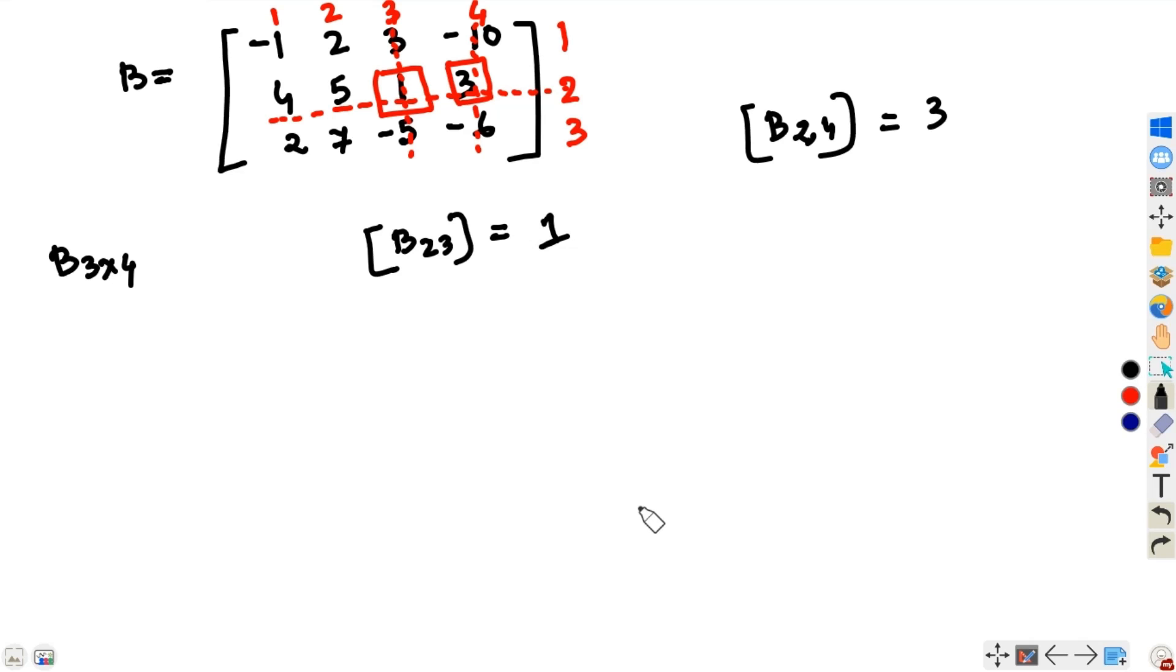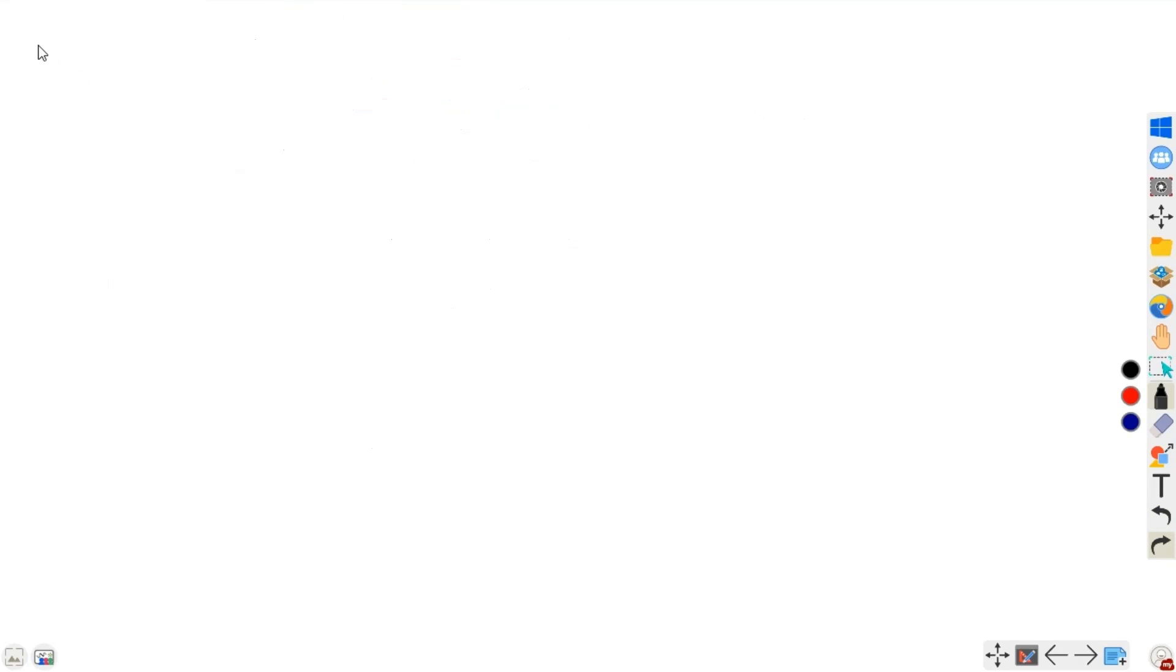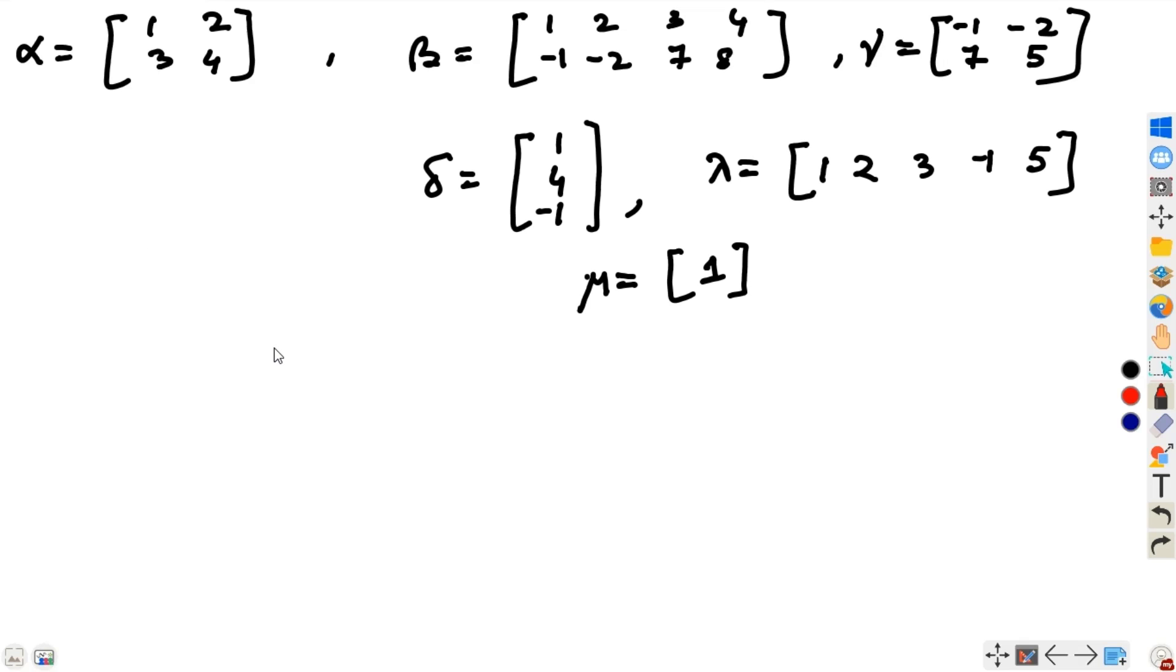Now, what I am going to do is I am giving you an assignment. Let us define few matrices here. We choose alpha equals 1, 2, 3, 4. Beta equals 1, 2, 3, 4, minus 1, minus 2, 7, 8. These are randomly chosen numbers. You can try anything you want.